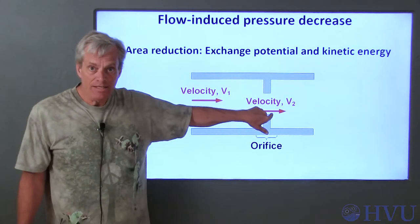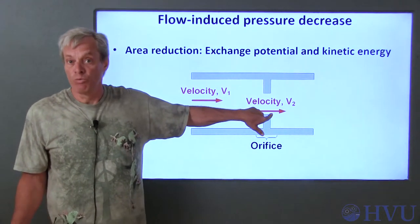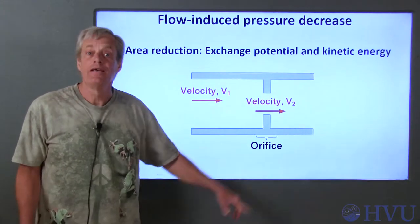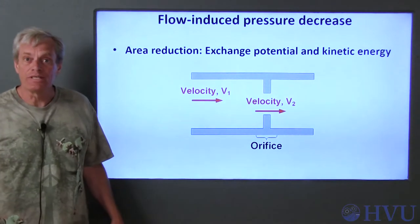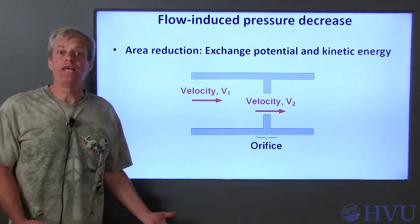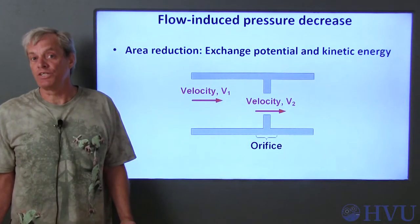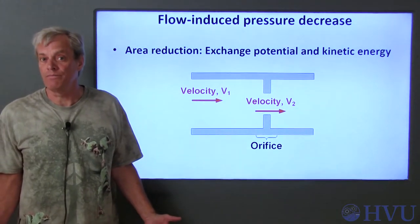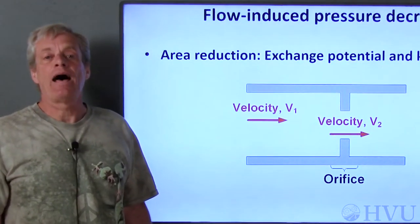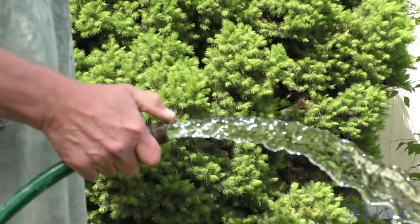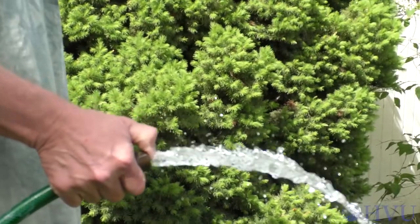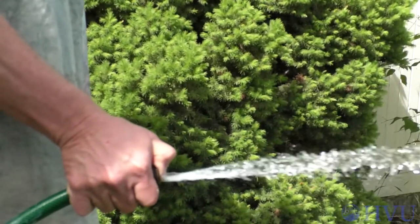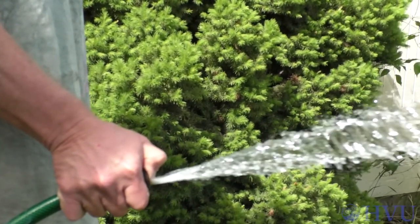A higher velocity means there is more kinetic energy in the fluid at the orifice. This increase in kinetic energy has to be balanced by a reduction in potential energy or pressure. This is exactly what happens when you put your thumb over the opening of a hose — the water speed increases, which causes the pressure to decrease.